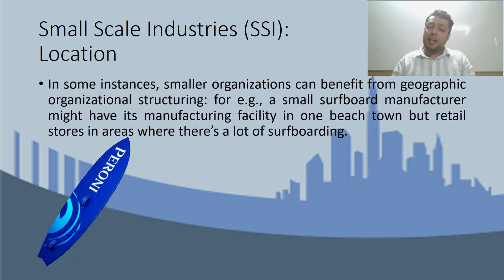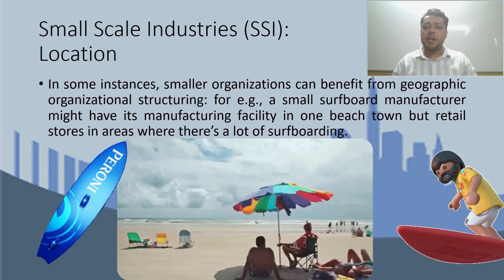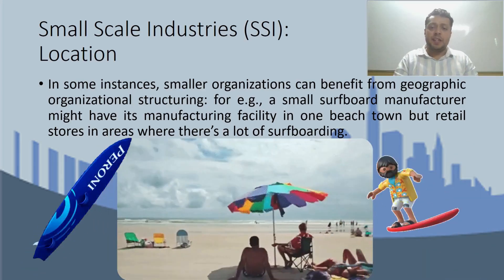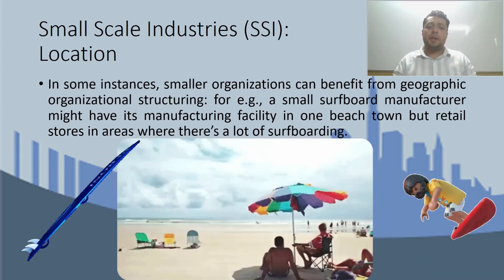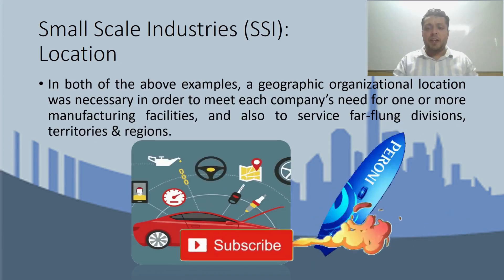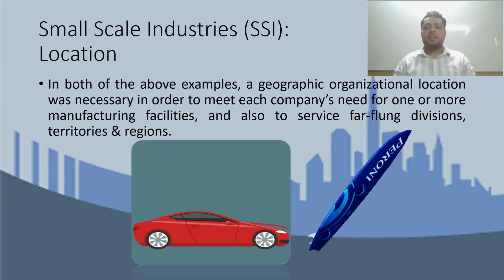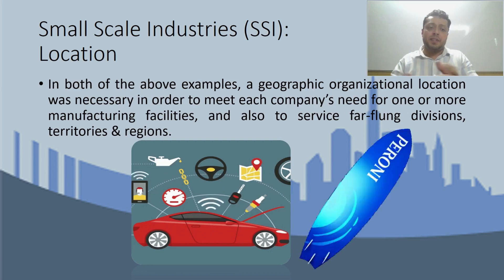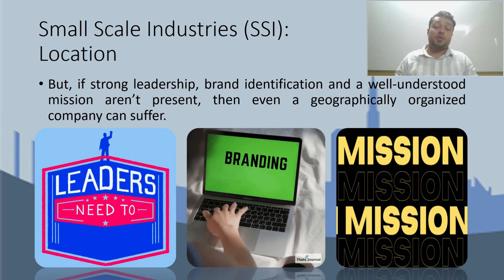In some examples, smaller organizations also benefit from geographic organizational structure. For example, consider a surfboard manufacturing company that makes surfboards. It can establish its manufacturing facility in a beach town and set up retail stores in every city and town where surfboarding is popular. Both examples — the automobile one and the surfboard one — required geographic organizational location so that the company's two needs could be met: one, having a manufacturing facility, and two, being able to provide company service in far-off divisions, territories, and regions.